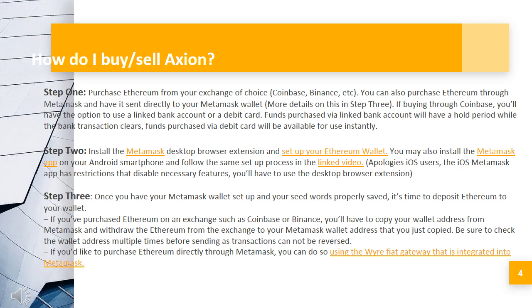If you've purchased Ethereum on an exchange such as Coinbase or Binance, you'll have to copy your wallet address from Metamask and withdraw the Ethereum from the exchange to your Metamask wallet address. Be sure to check the wallet address multiple times before sending, as transactions cannot be reversed. If you'd like to purchase Ethereum directly through Metamask, you can do so using the Wyre fiat gateway integrated into Metamask.